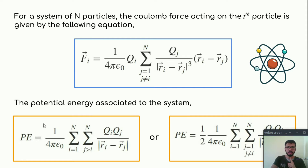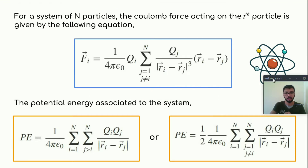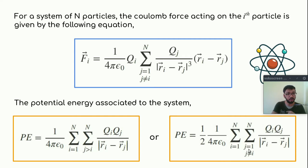One more important quantity is the potential energy associated with the system. These two are the expressions for our potential energy. The basic difference is that in the first expression, the dummy index j runs from j greater than i to n, while in the second expression j runs from 1 to n, and a one-half factor appears in the second expression.